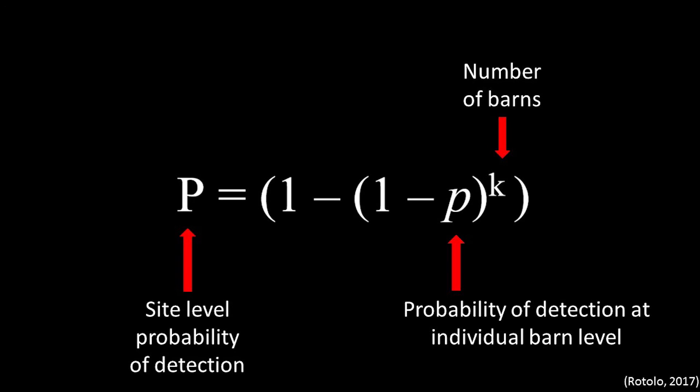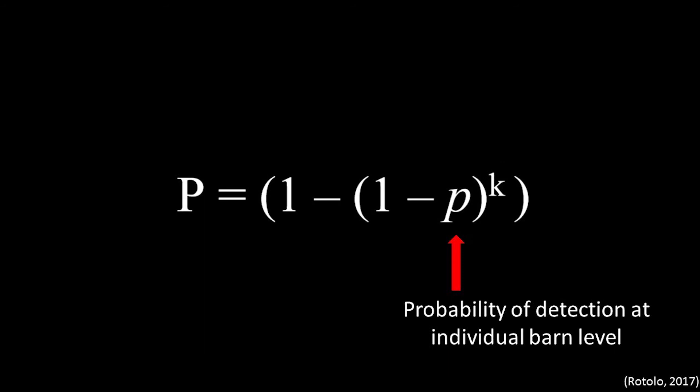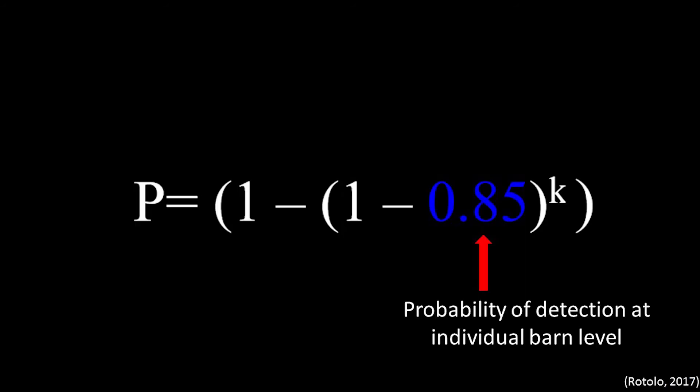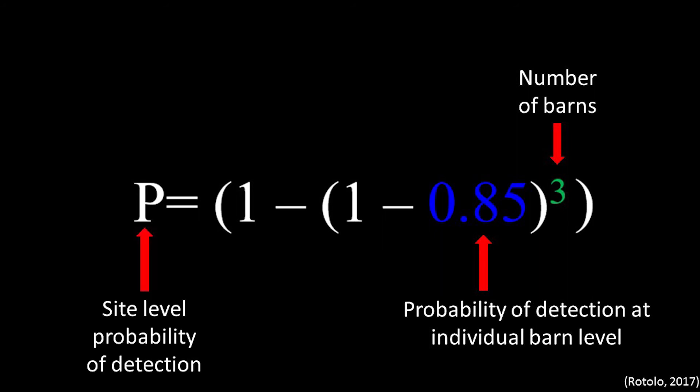Specific values can be plugged into the equation to estimate the probability of detection for a farm site. First, let's find the probability of detection for an individual barn on the site. If a producer collects six oral fluid samples in a barn with nine positive pens, their probability of detection is 85%. 0.85 is substituted into the equation. And let's say there are three barns in the site that are all similar in design. Using these values, their probability of disease detection at the site is 99.66%.